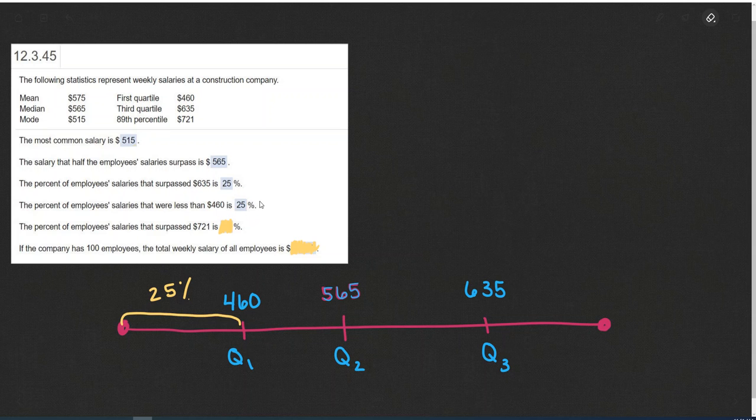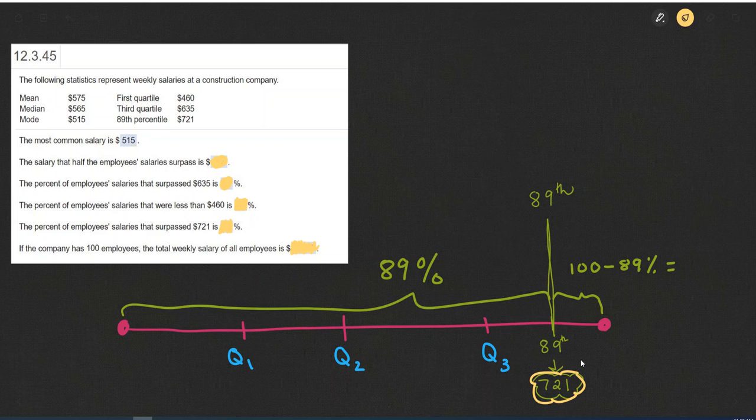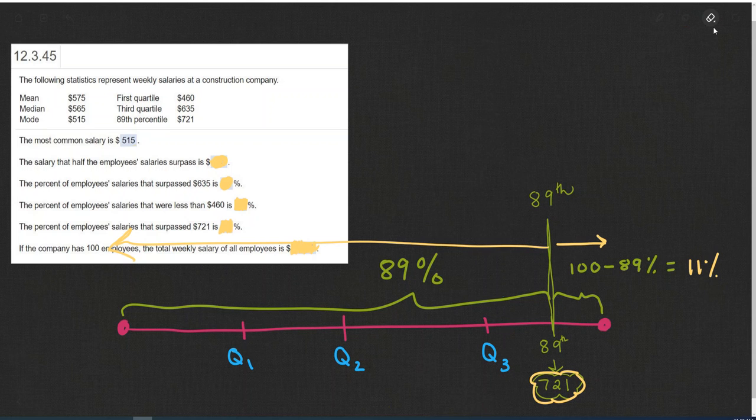The percent of employees' salaries that surpassed $721, for that question, we're going to use the 89th percentile. The 89th percentile is $721, and what that 89th percentile means is that there are 89% of the salaries below $721. And 100% minus 89%, which would be 11%, 11% of the salaries are above the $721 mark. So that's 11%.